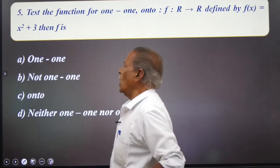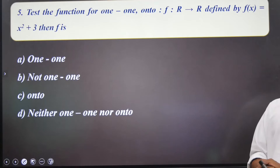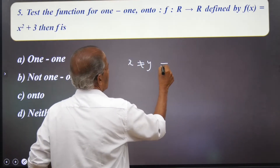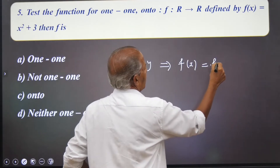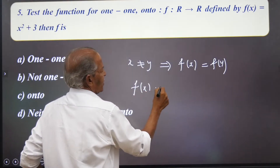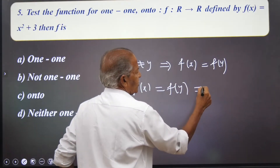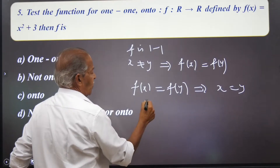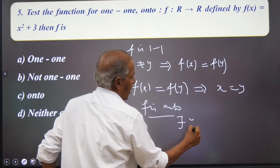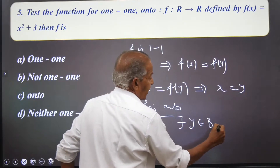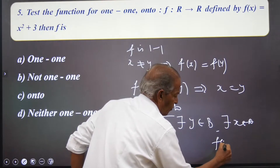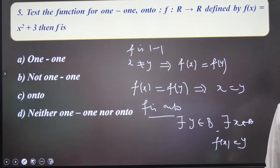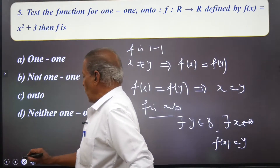Let us review the definitions of one-to-one and onto. A function f is one-to-one (1-1) if x ≠ y implies f(x) ≠ f(y), or equivalently f(x) = f(y) implies x = y. A function f is onto if for every y in the codomain, there exists x in the domain such that f(x) = y — meaning every element in the codomain has a preimage.